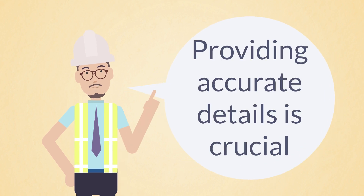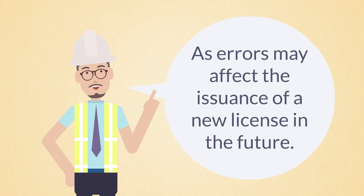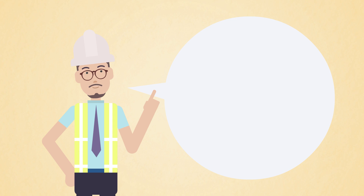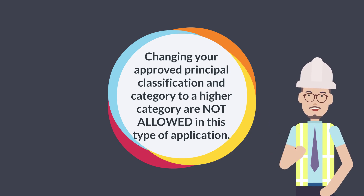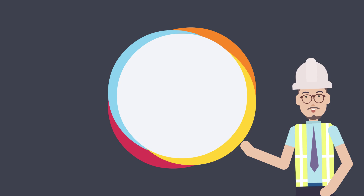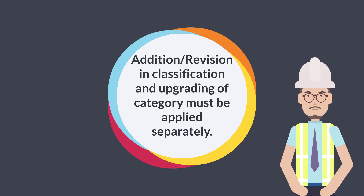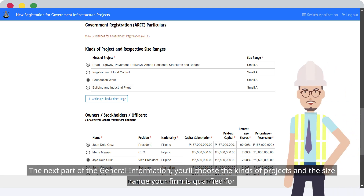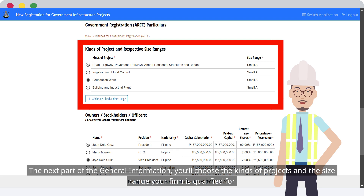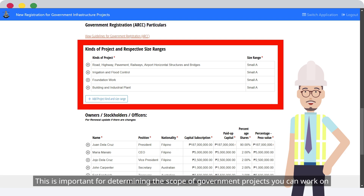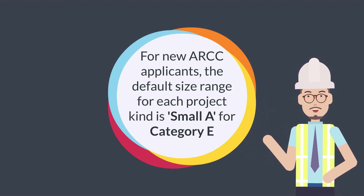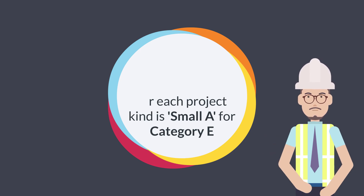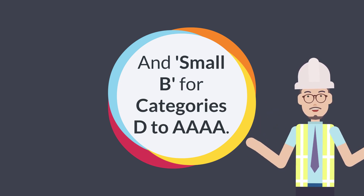Providing accurate details is crucial, as errors may affect the issuance of a new license in the future. Be sure to fill out all required fields marked with an asterisk. Changing your approved principal classification and category to a higher category are not allowed in this type of application. Addition or revision in classification and upgrading of category must be applied separately. In the next part of the general information, you'll choose the kinds of projects and the size range your firm is qualified for. This is important for determining the scope of government projects you can work on. For new ARCC applicants, the default size range for each project kind is Small A for Category E, and Small B for Categories D to Quadruple A.